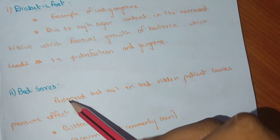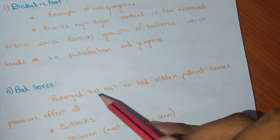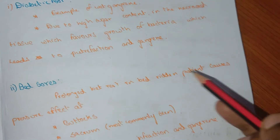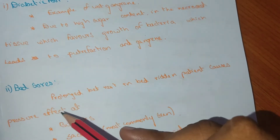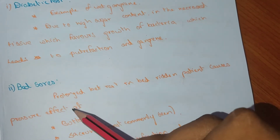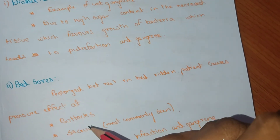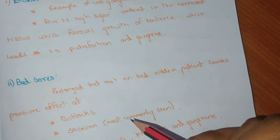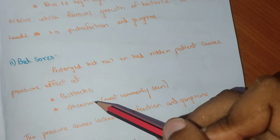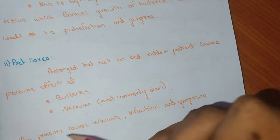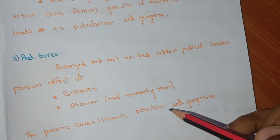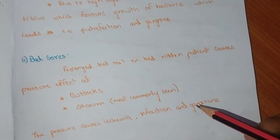Bed sores result from prolonged bed rest in bedridden patients. The pressure effect, most commonly at the buttock and sacrum, causes ischemia, infarction, and gangrene.